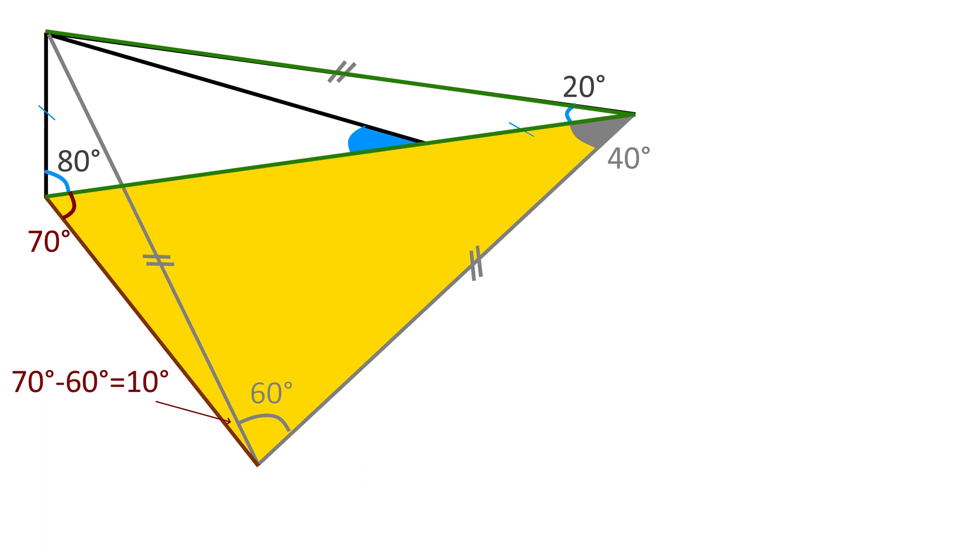And therefore, this small angle is 70 minus 60 equals 10 degrees. This pink angle is 20 degrees.